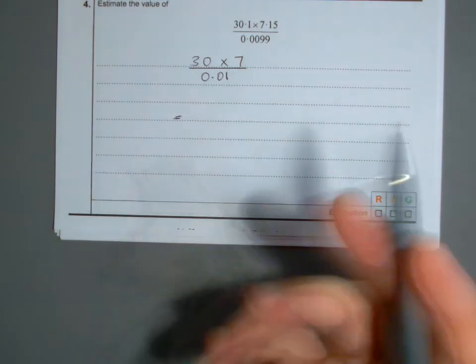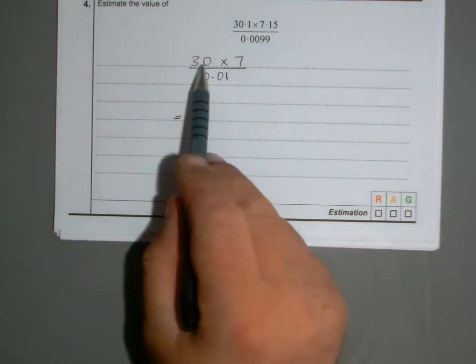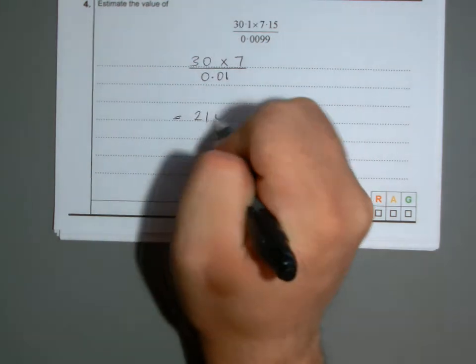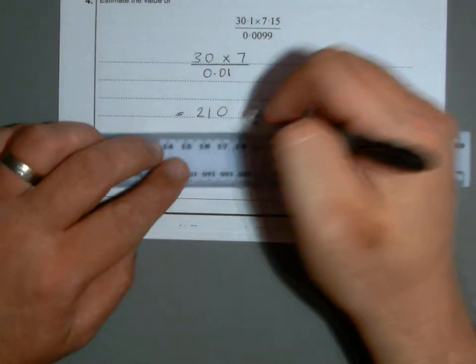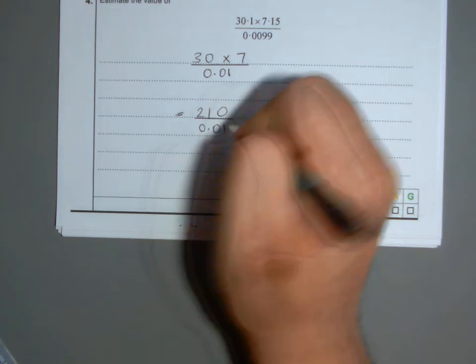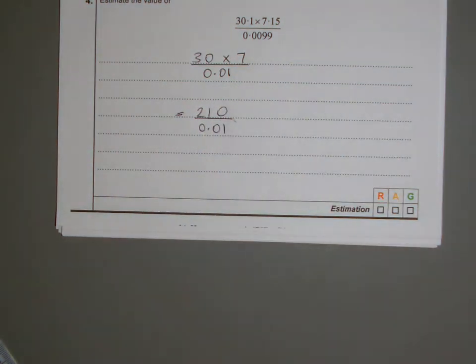We can estimate this now. The idea is you do it in your head but show your workings on paper. 30 times 7: 3 times 7 is 21, add the zero, so 210. I've done the top there easily. Now you're going to divide by 0.01, which is like 100, but you can scale up this fraction. That's an easy way of doing it.